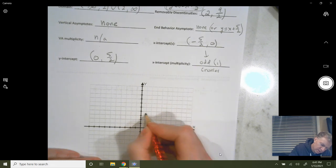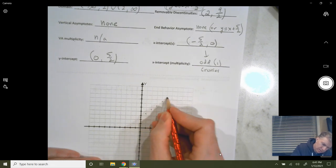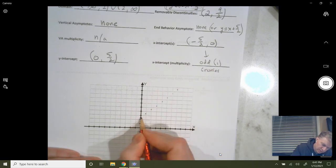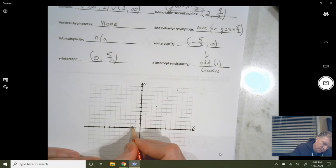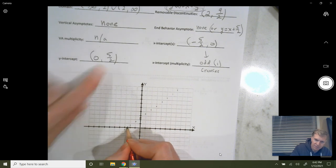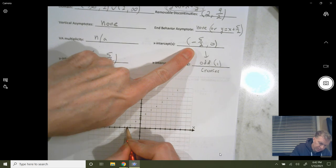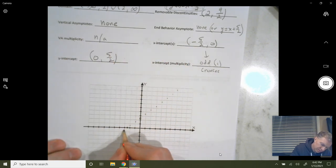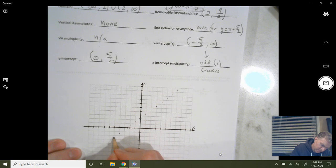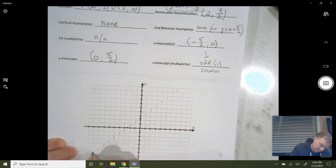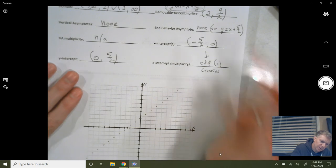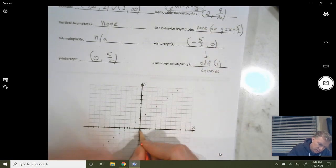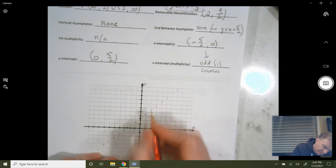So 2.5 is your y-intercept. Slope of 1. So you're going to actually cross here at x-value of negative 2.5. That's your x-intercept. And your removable discontinuity is at 2, 4 1⁄2. So 2, 1, 2, 3, 4 1⁄2. That point there is going to be an open circle.